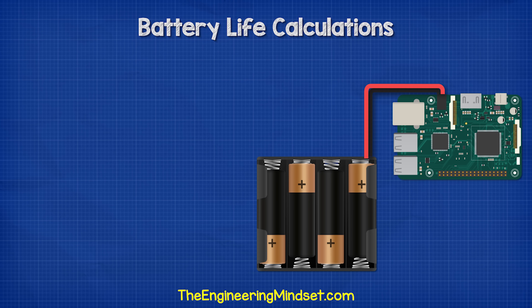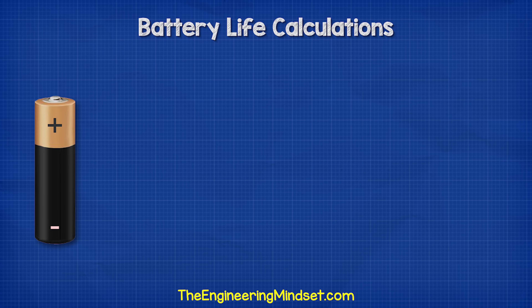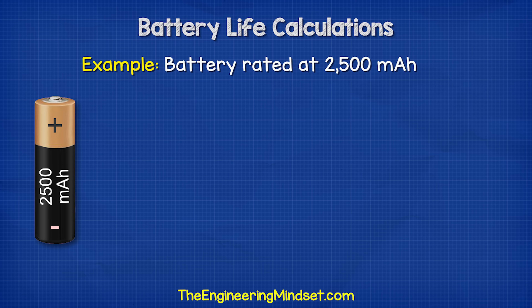We use batteries to power our circuits. But how long can a battery power our circuit for? When we look at the packaging or datasheet for a battery, we see a value with the letters MAH next to it. This is the milliamp hour rating. For example, this one has a rating of 2,500 milliamp hours.